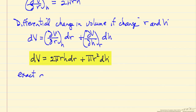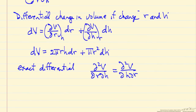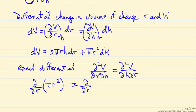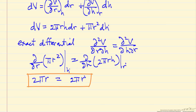This is an exact differential, which means we can write the second mixed derivative. First differentiating with respect to h then with respect to r should give the same result as doing it in reverse order — the order of differentiation doesn't matter. We can check: the derivative with respect to r of (∂V/∂h) gives 2πr, and the derivative with respect to h of (∂V/∂r) also gives 2πr, as expected.